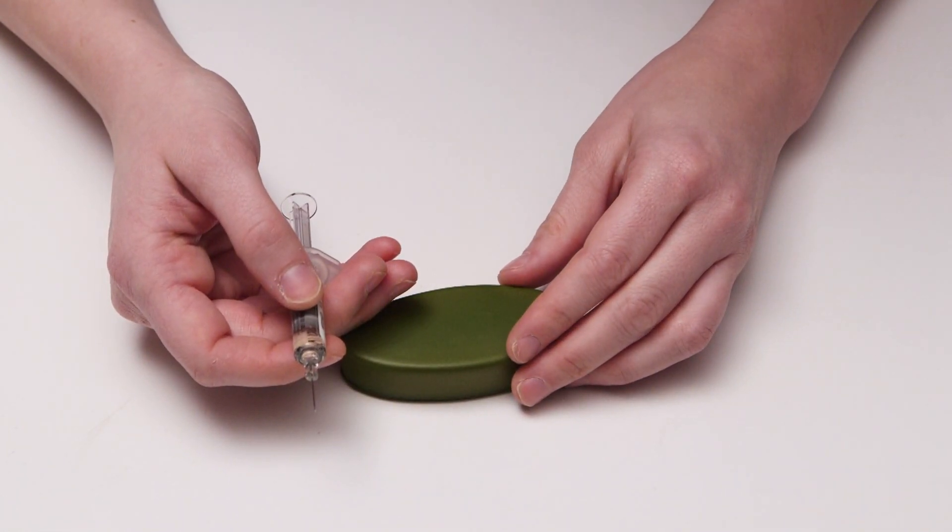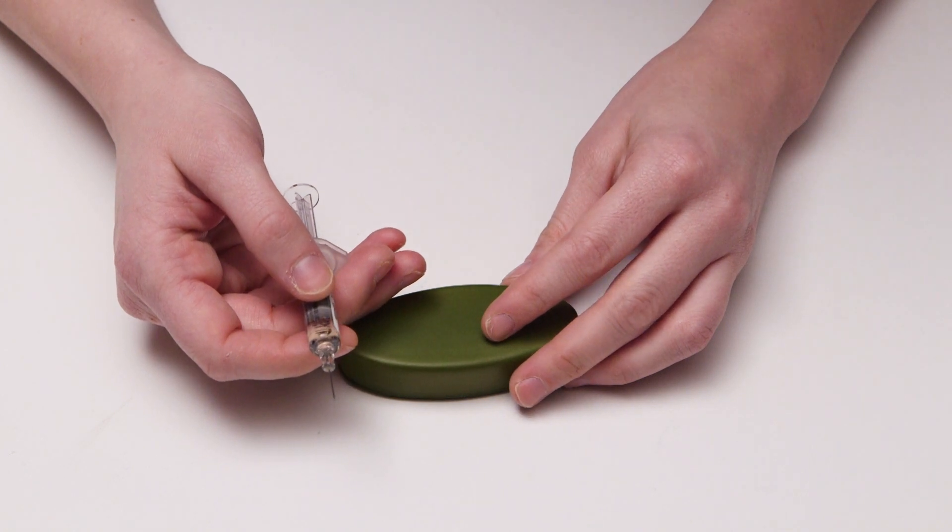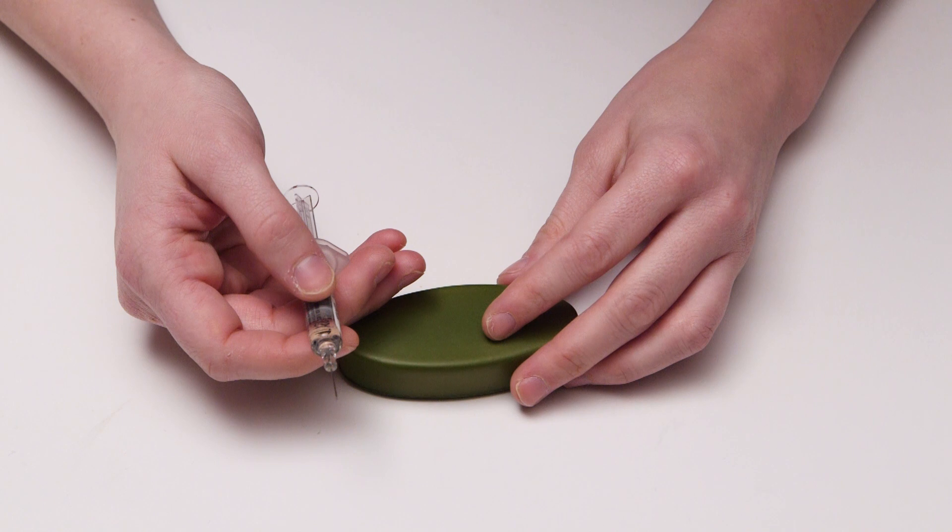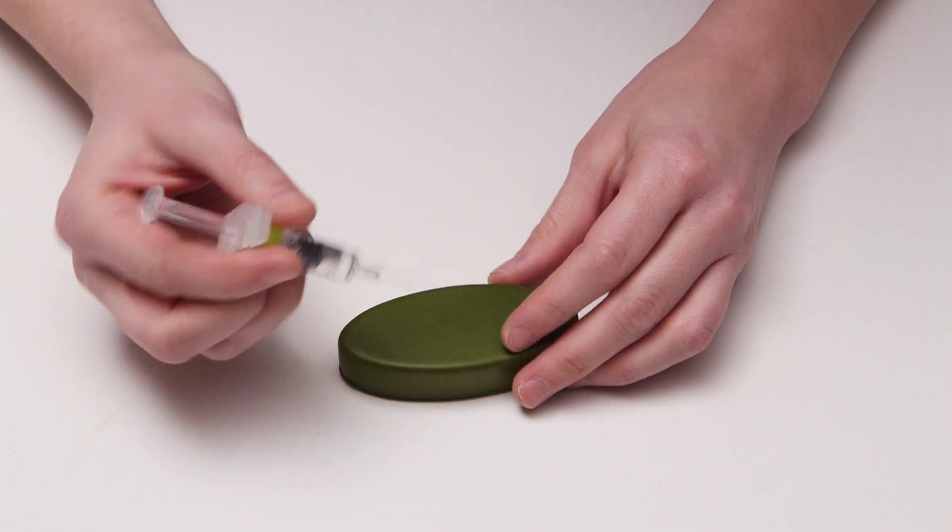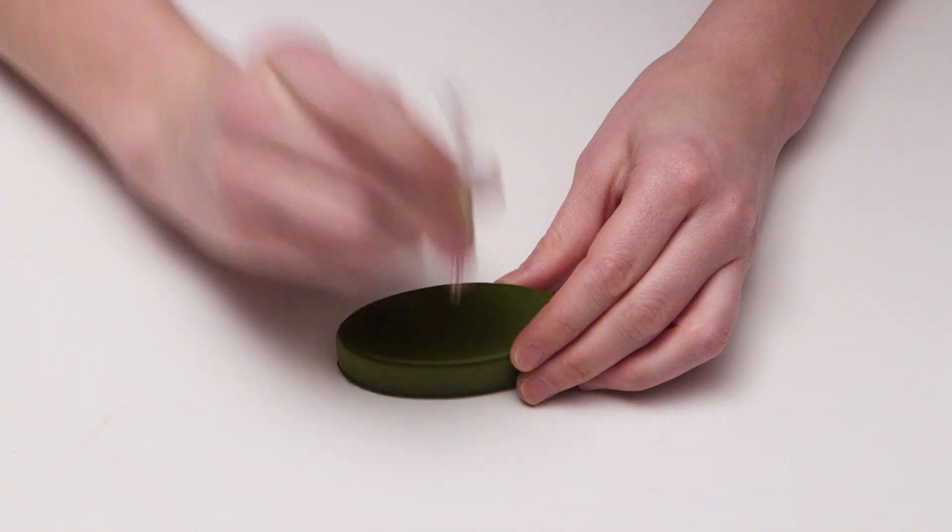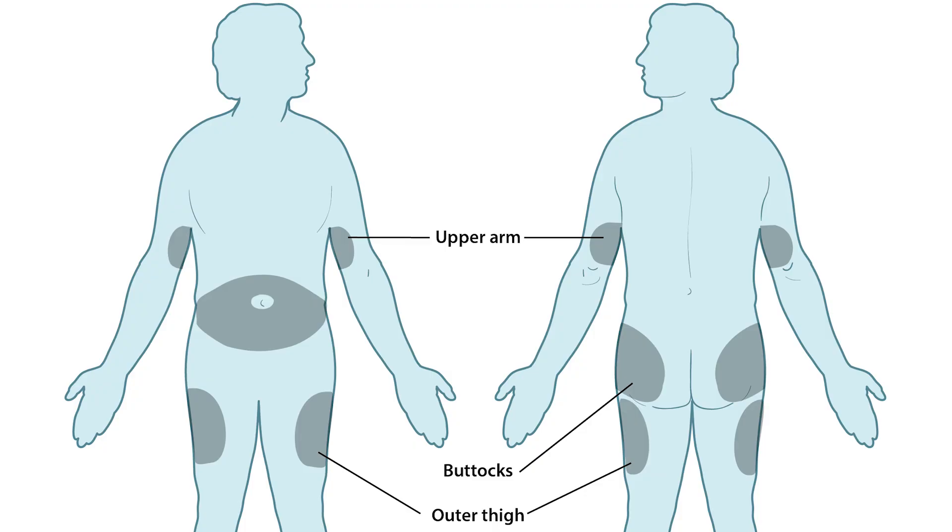The person receiving this shot will most likely be unaware or unconscious when this shot is given, so don't be afraid to use more force. This shot can be given through the clothes and anywhere in the body that there's muscle, but most people give it in the arm, leg, or buttocks.